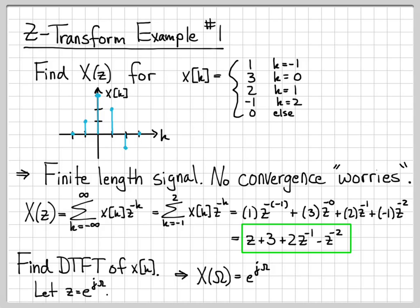I replace the first Z with e to the j omega, plus 3. There aren't any Zs there to worry about. Plus 2 times Z to the minus 1, but Z to the minus 1 is e to the minus j omega, once I've swapped out Z with e to the j omega, minus e to the minus 2 j omega. So I can easily get out the DTFT of my signal just by evaluating the Z transform on the unit circle.